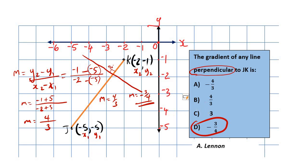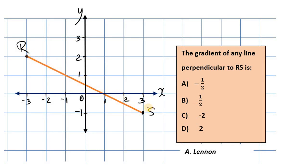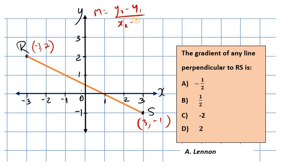Let's look at another example. Here we have line RS. Let's find its gradient. The location of R is negative 3 and positive 2. The location of S is 3 on the x-axis and negative 1 on the y-axis. Using the formula y2 − y1 over x2 − x1 — change in y over change in x — we label R as (x1, y1) and S as (x2, y2).